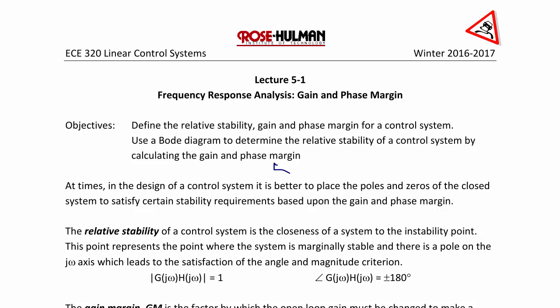At times in the design of a control system, it is better to place the poles and zeros of the closed-loop system to satisfy certain stability requirements based upon the gain and the phase margin. The relative stability of a control system is the closeness of a system to its instability point. This point represents where the system is marginally stable and there is a pole on the j-omega axis, which leads to the satisfaction of the angle and magnitude criterion. Recall that the criteria are that the magnitude of G(jω)H(jω) equals 1 and the angle of G(jω)H(jω) equals plus or minus 180 degrees.